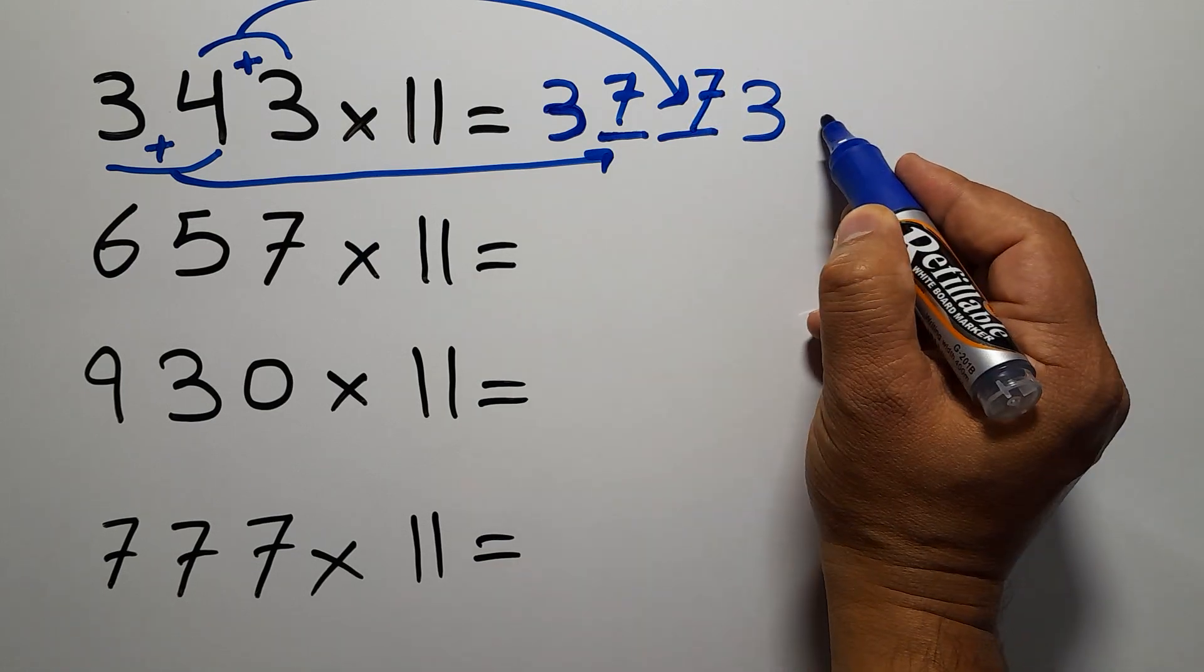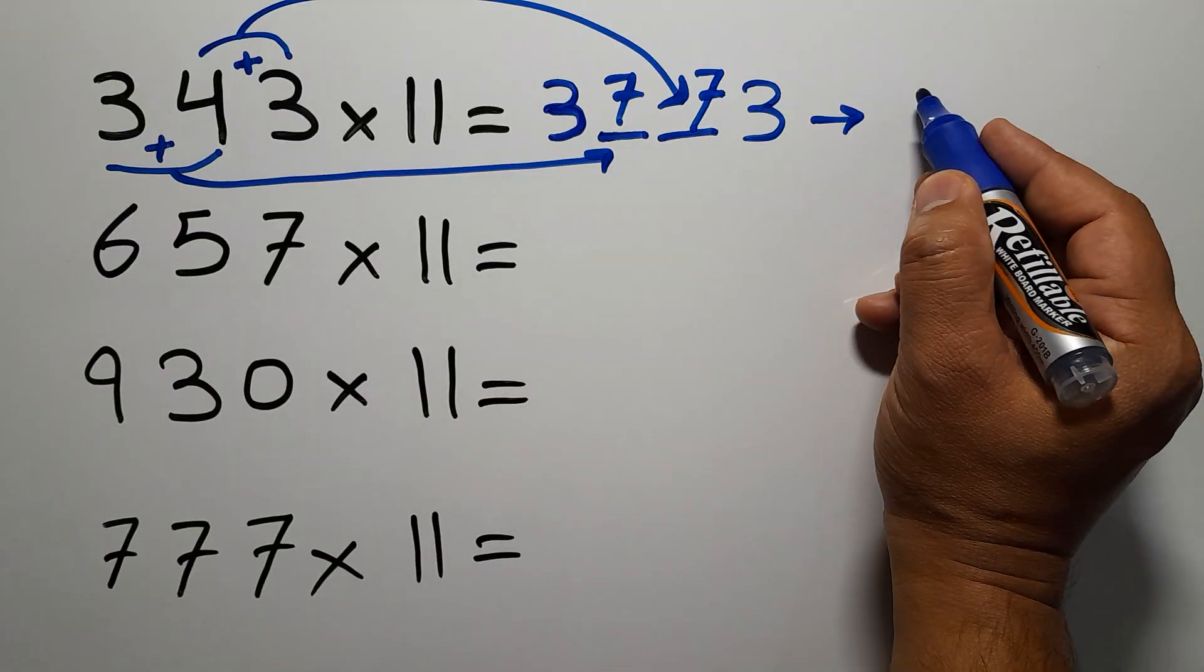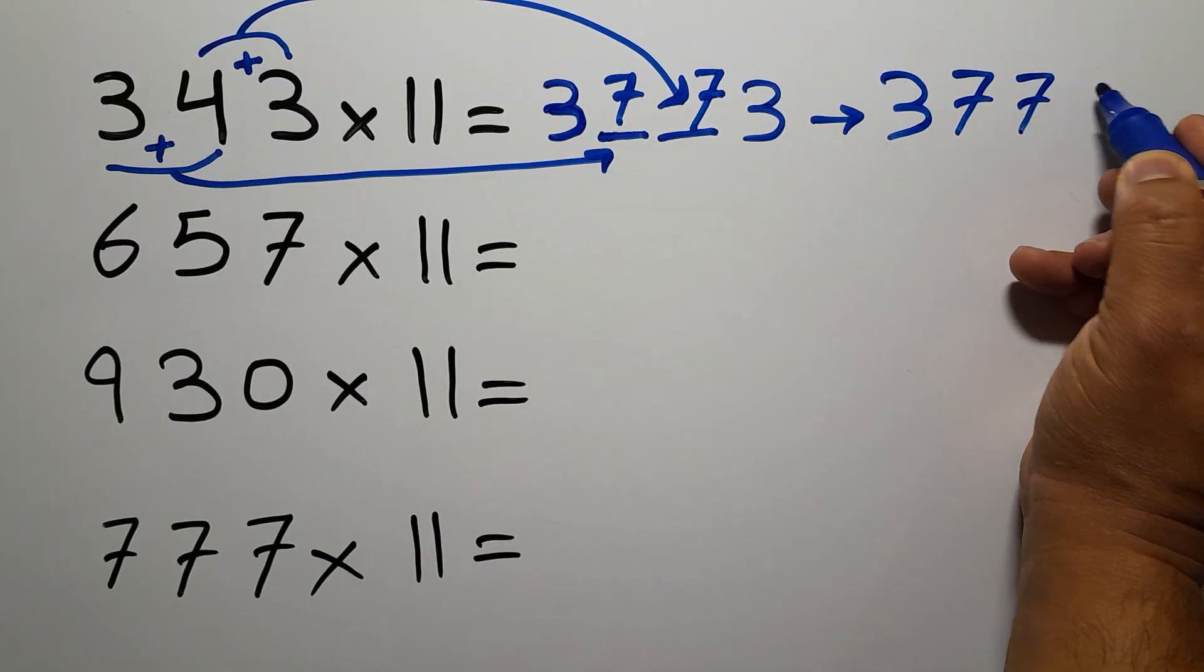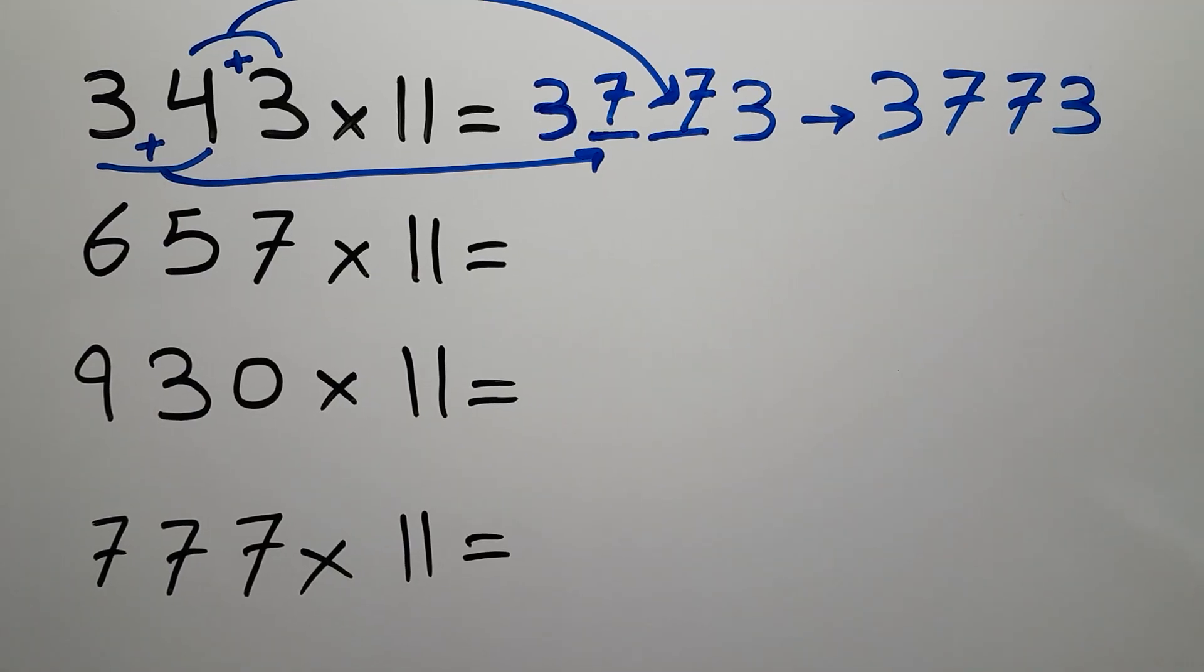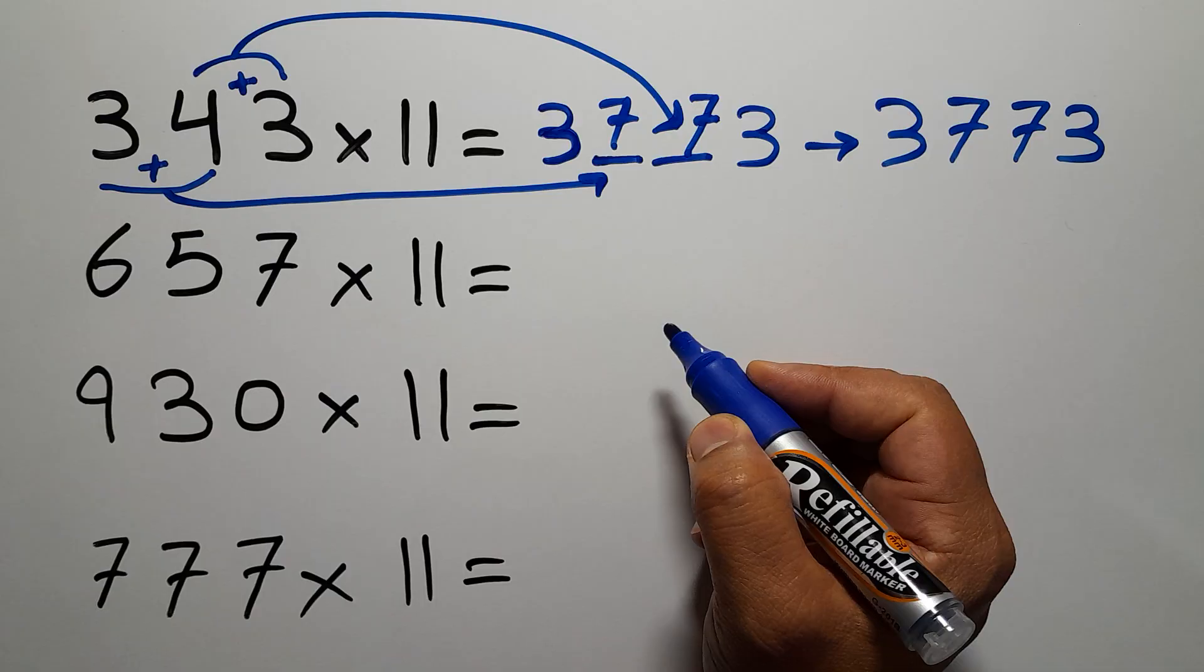So therefore, our answer to this multiplication is 3773. Now let's move on to the second multiplication.